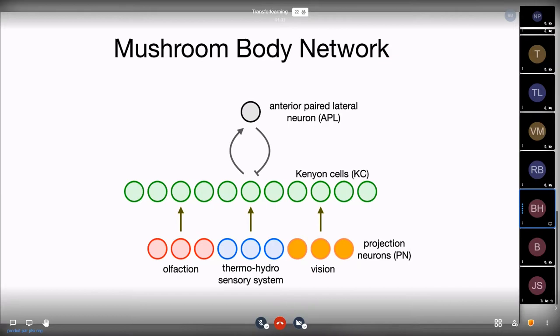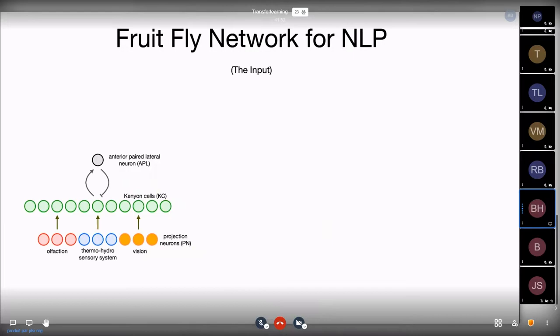The input is the bottom and the input is composed of three different sensory modalities for the fruit fly. We can look at the olfaction, so the sense of smell of the fruit fly, the thermohydrosensory system, or how well can it sense temperature, humidity, and vision. These are just standard inputs into the life of a fruit fly. These are synaptically connected to a network of Kenyan cells represented by the green circles. These are the cells that learn how to associate inputs, and we'll talk more about that as well.